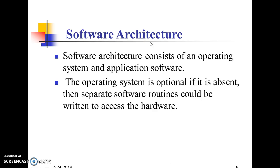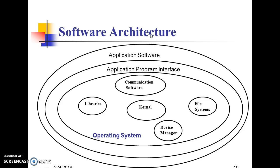Software Architecture consists of an operating system and application software. The operating system is optional; if it is absent, separate software routines could be written to access the hardware. Software Architecture consists of the operating system, application program interface, and application software.